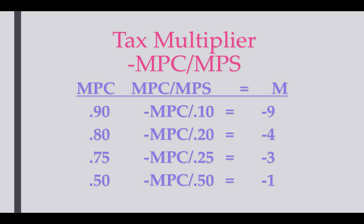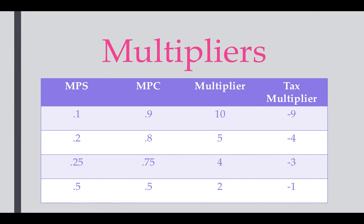We'll continue to practice, so you'll get work with this. The first time is always a little bit tough. Looking at the multipliers and tax multipliers together: if MPS is 0.1, MPC must be 0.9. Then 1 over 0.1 gives a multiplier of 10, and the tax multiplier must be negative 9, and so on. You could memorize these, but it's really not something hard to figure out given any of the numbers.